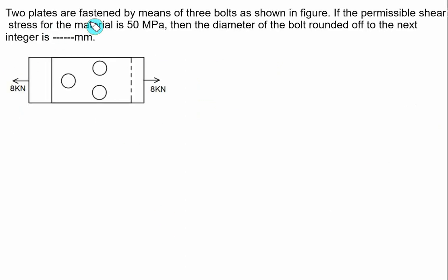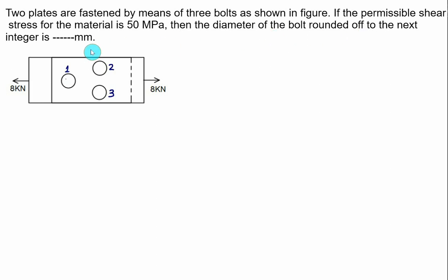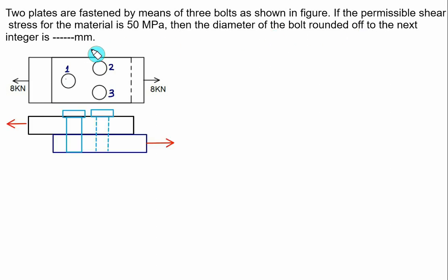Two plates are fastened by means of three bolts as shown in figure: bolt number one, bolt number two, and bolt number three. The permissible shear stress for the material is 50 MPa (tau allowable). We have to find the diameter of the bolt rounded off to the next integer. The force F acts leftward on the top plate and 8 kN acts rightward on the bottom plate.